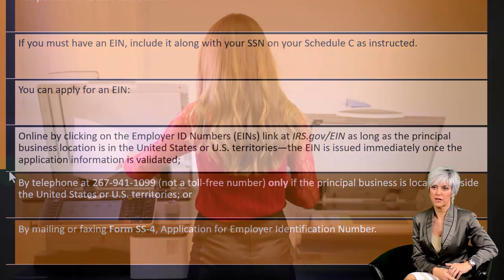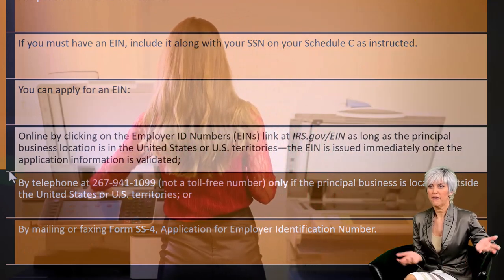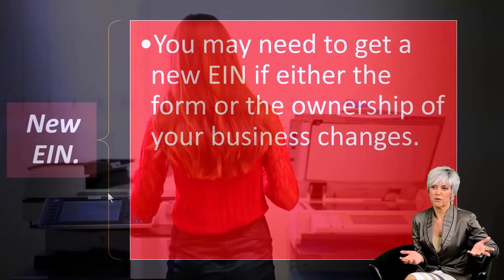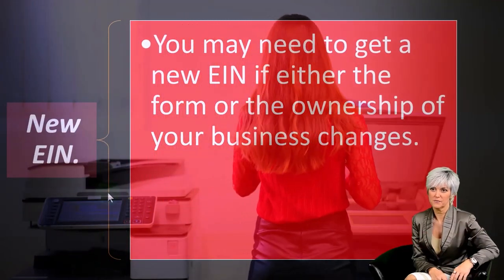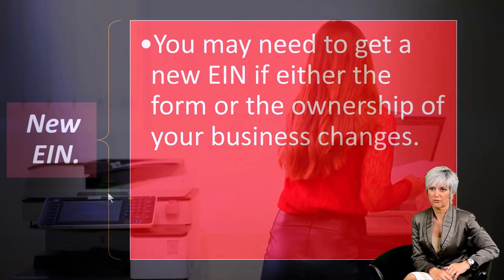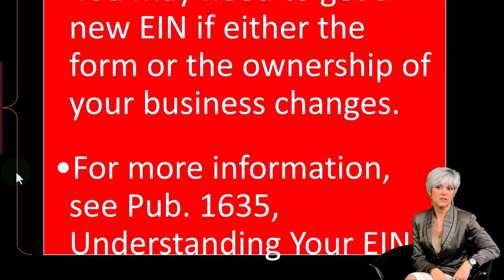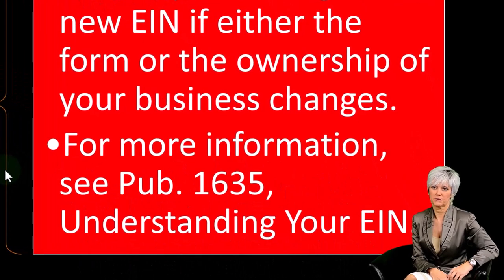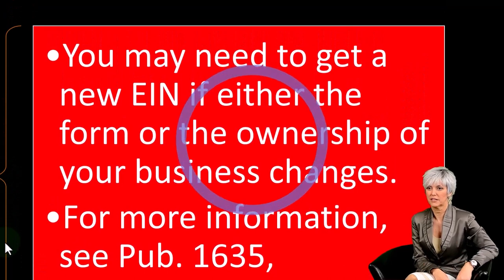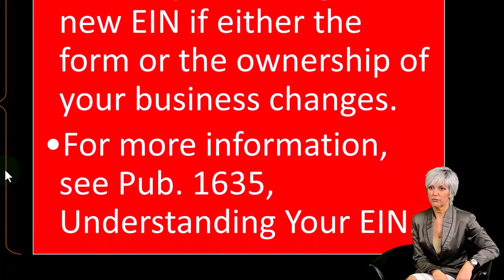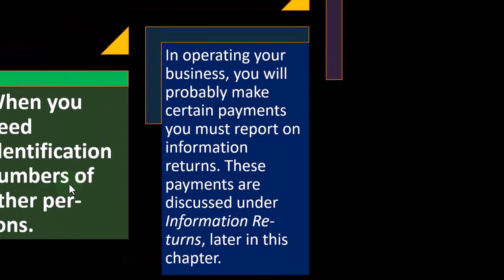You can also apply by mailing or faxing Form SS-4, the application for employer identification number — old school if you want. You may need to get a new EIN if the form or ownership of your business changes, making it a different business entity. For more information, see Publication 1635, Understanding Your EIN.